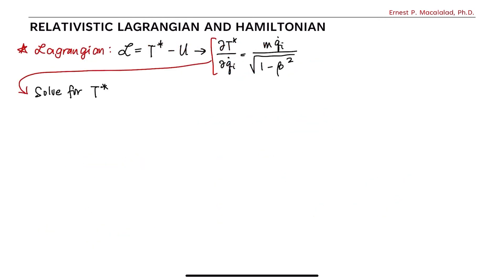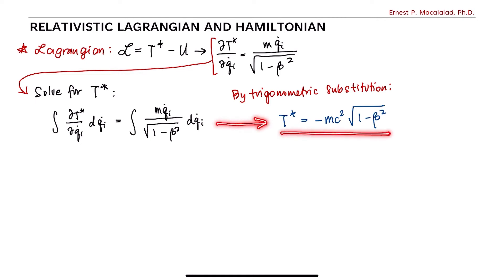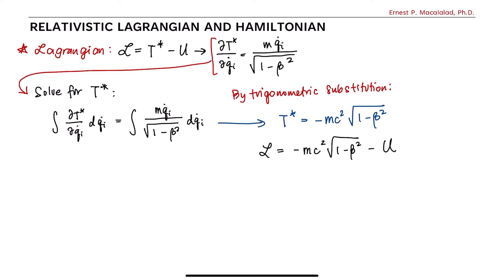Solving for t-star, we have the integral of the derivative of t-star with respect to qi-dot dqi-dot equals the integral of m times qi-dot divided by the square root of 1 minus beta squared dqi-dot. By trigonometric substitution, t-star is now equal to negative m c squared times the square root of 1 minus beta squared. It's your task to determine how we end up with this equation. Using this expression, we can now rewrite the relativistic Lagrangian as L equals negative m c squared times the square root of 1 minus beta squared minus the potential energy U. This expression allows us to calculate the equations of motion of a particle at relativistic speed using the usual Euler-Lagrange equations.